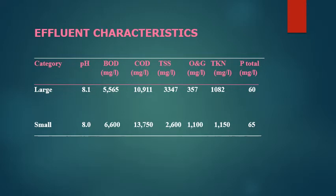For a large abattoir, the effluent characteristics are approximately: pH around 8; BOD 5,000–6,000 mg/litre; COD 10,000–13,000; total suspended solids 2,600–3,000; oil and grease 357–1,100; total Kjeldahl nitrogen 1,082–1,150; and total phosphorus 60–65. This gives an idea about the characteristics of abattoir effluent.